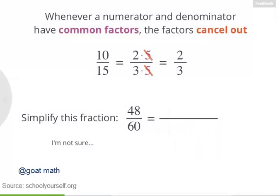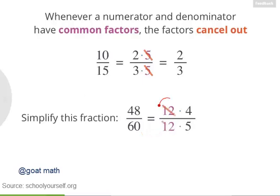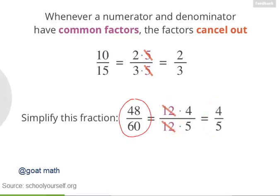Nicely done. 48 equals 12 times 4, while 60 equals 12 times 5. The twelves cancel, leaving you with four-fifths. So 48 sixtieths equals four-fifths.